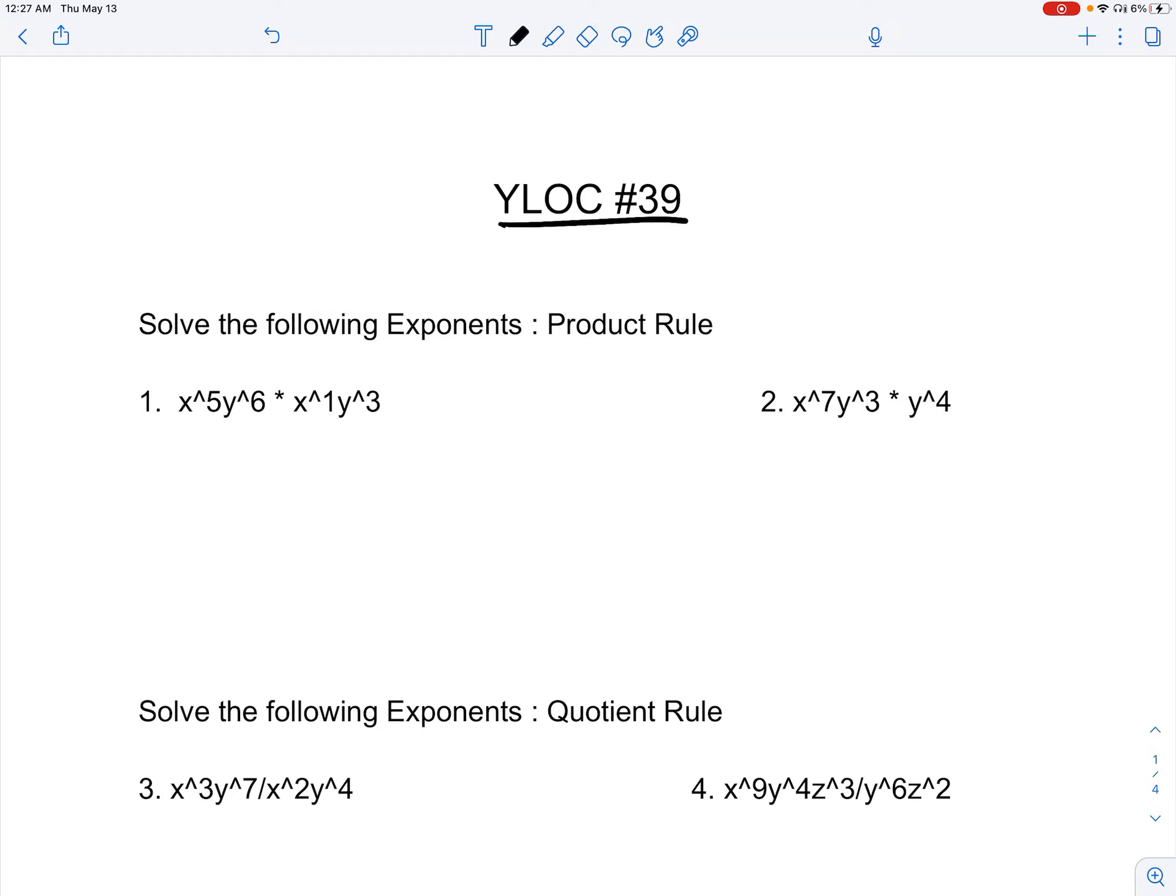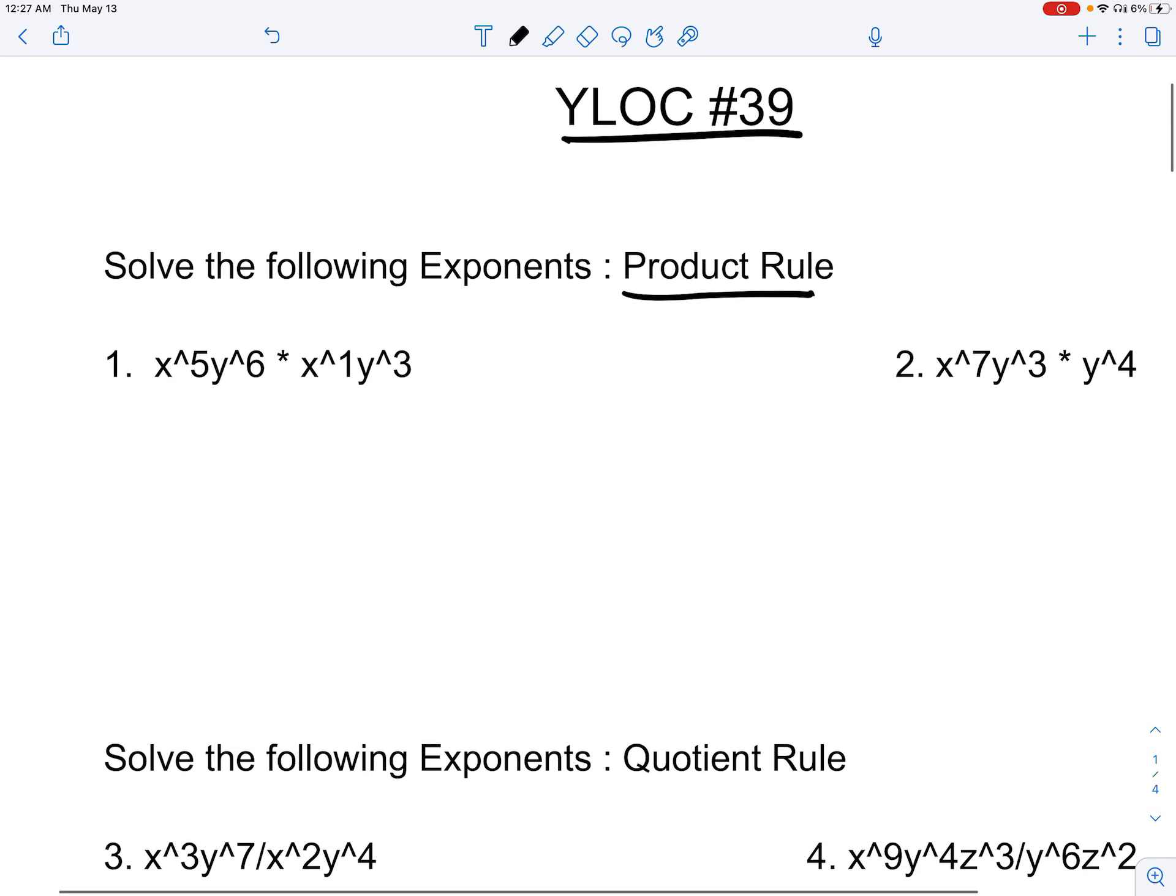Hello, this is Ylock number 39. Reviewing once more, let's go over product rule. For product rule, we can see that x to the 5th, y to the 6th times x to the 1st, y to the 3rd.